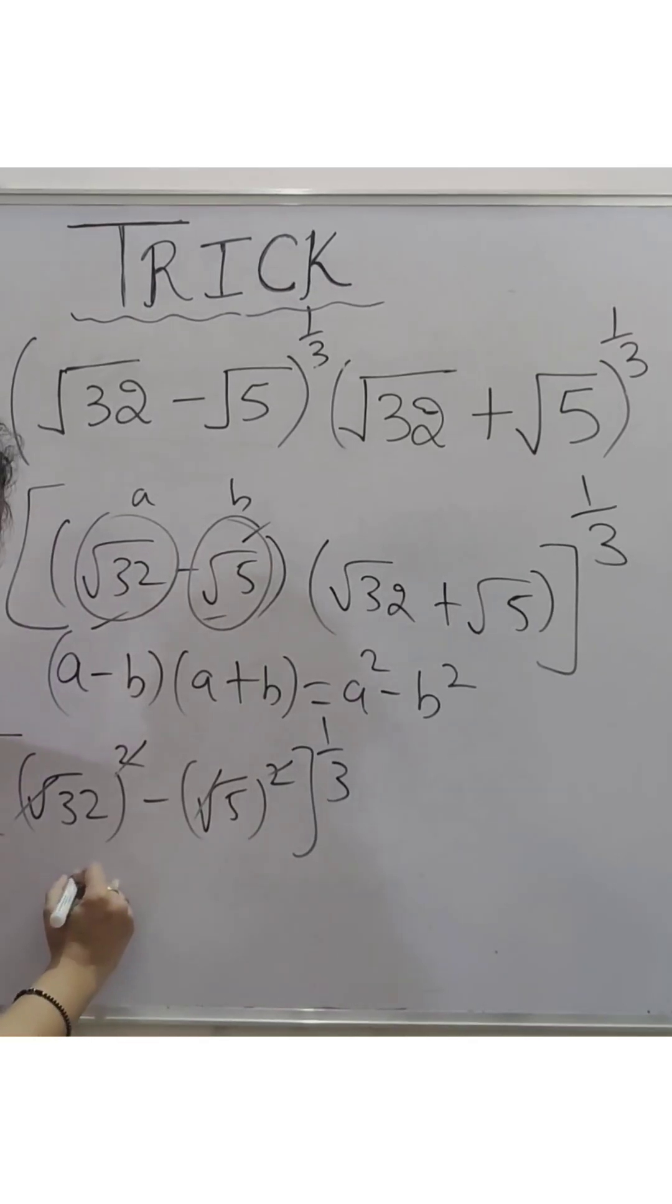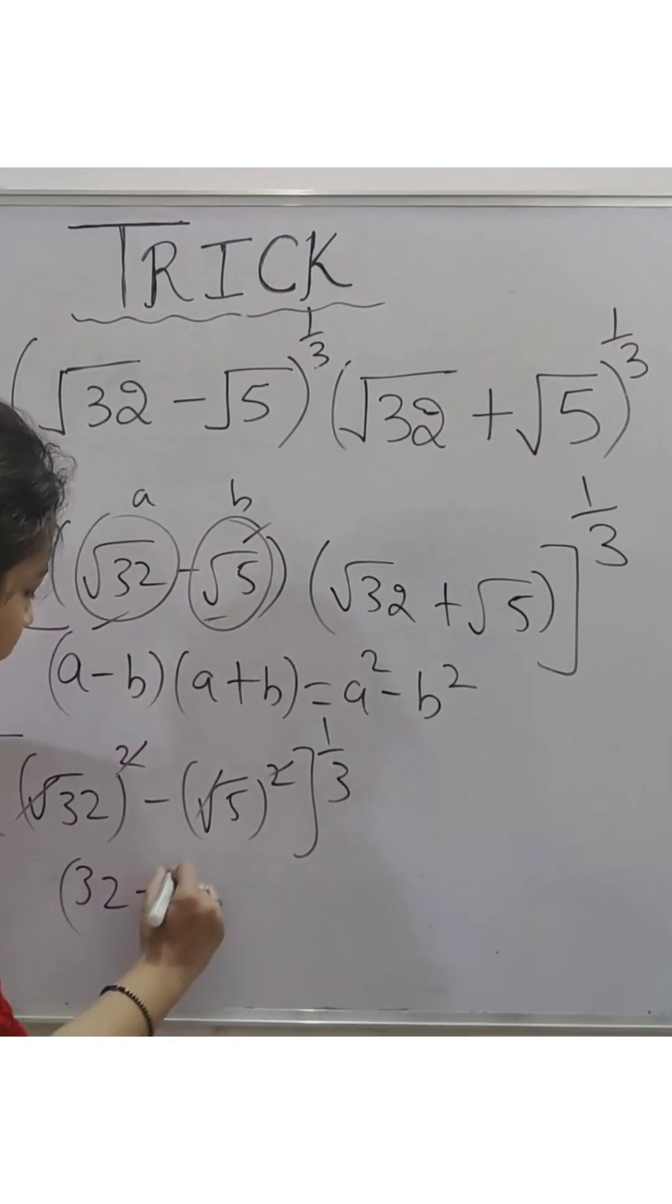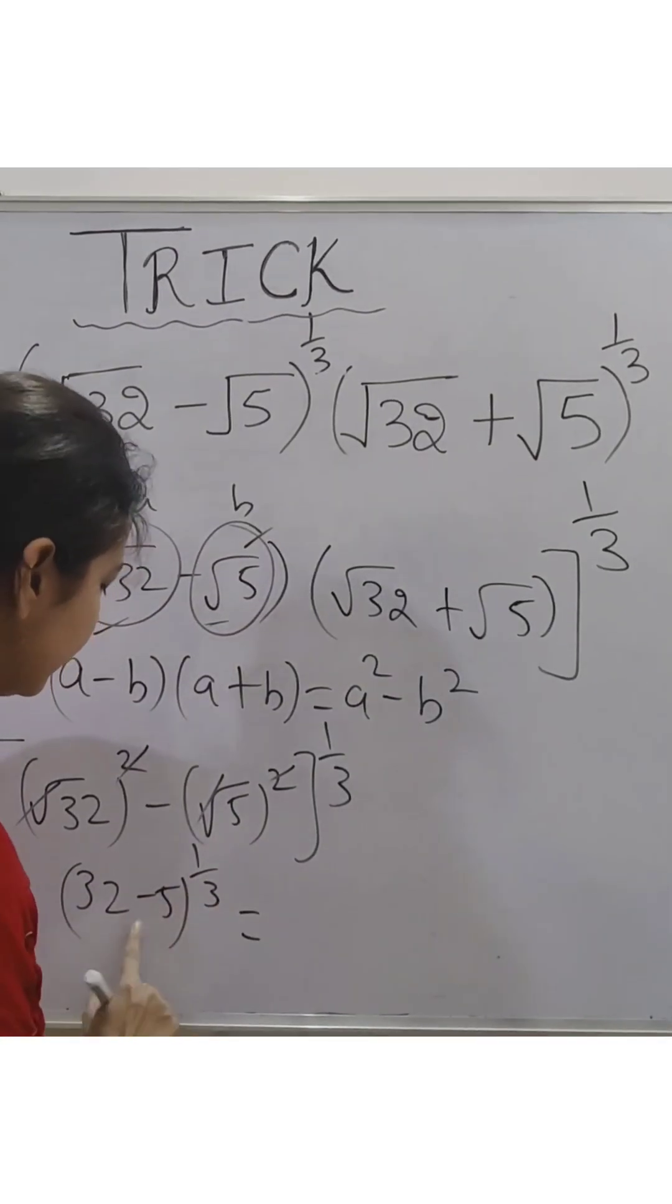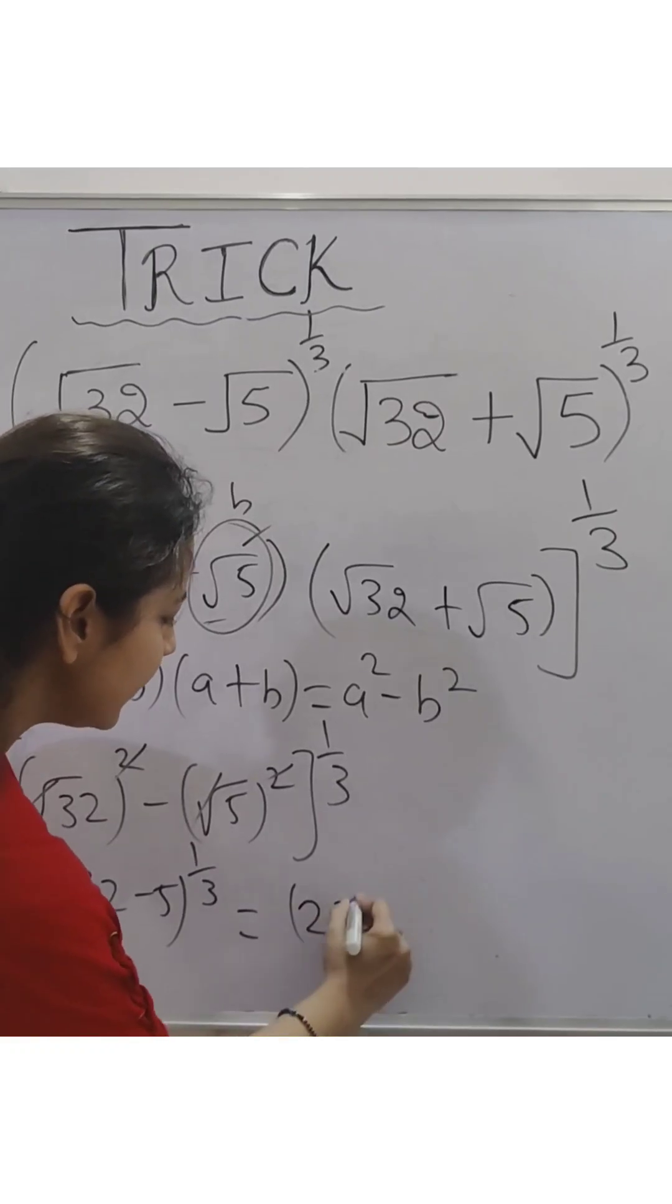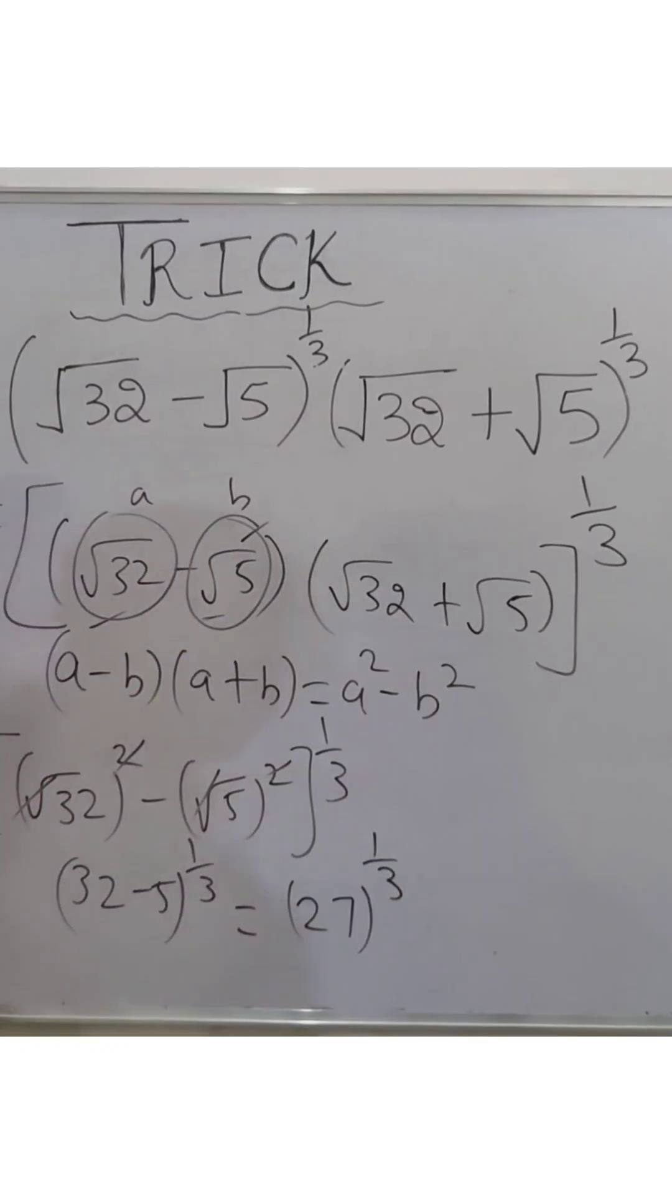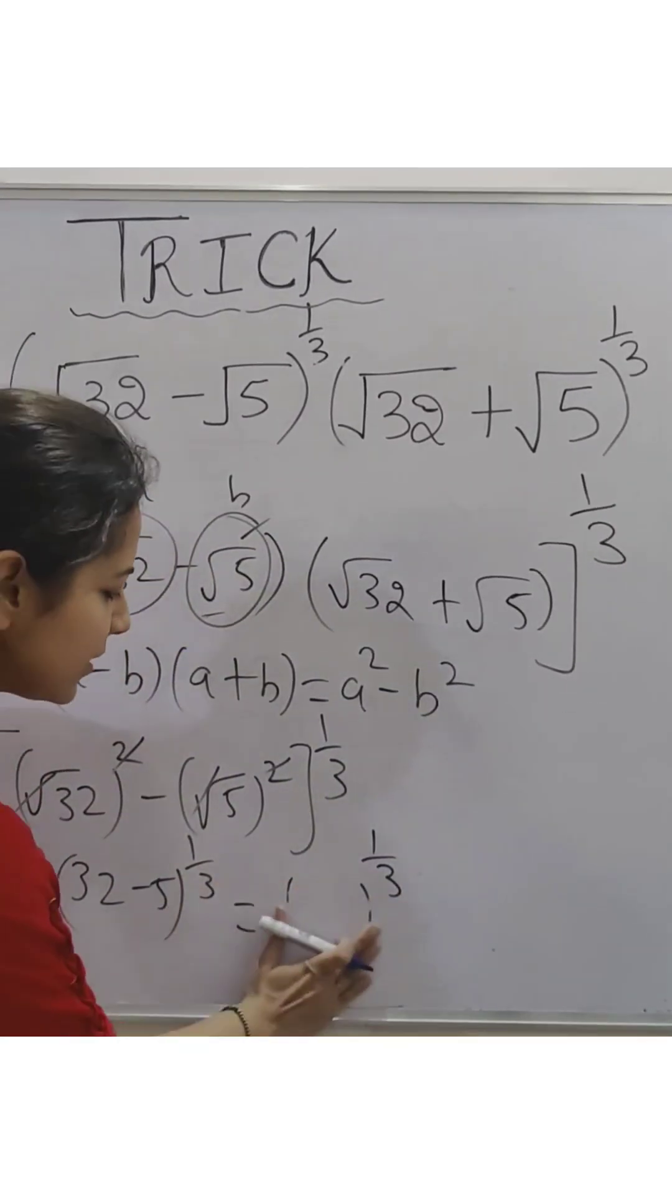root cut with square. So you have 32 minus 5 whole power 1 upon 3. 32 minus 5 is 27 and the whole power is 1 upon 3. Now 27 can be written as 3 cube.